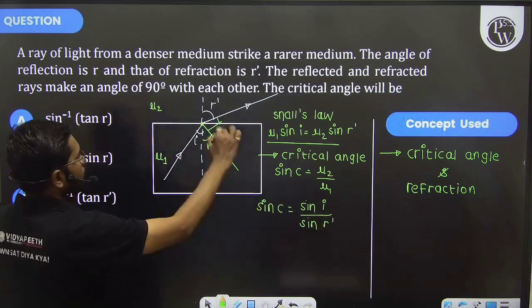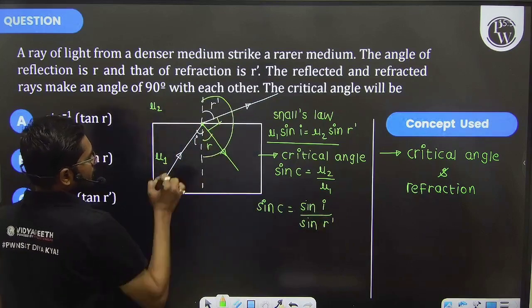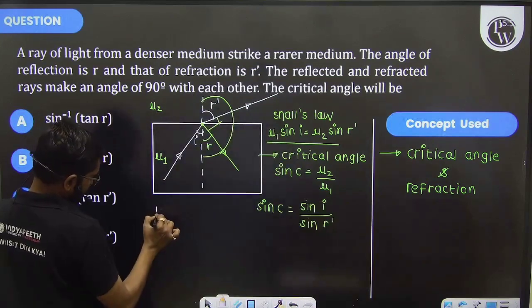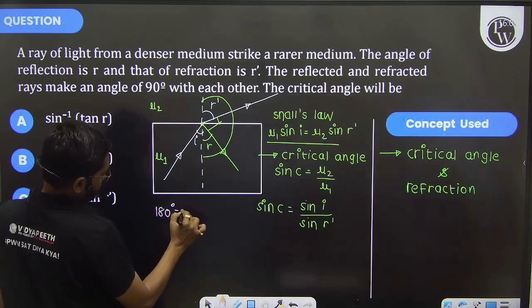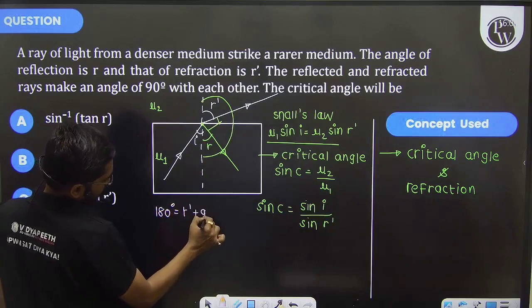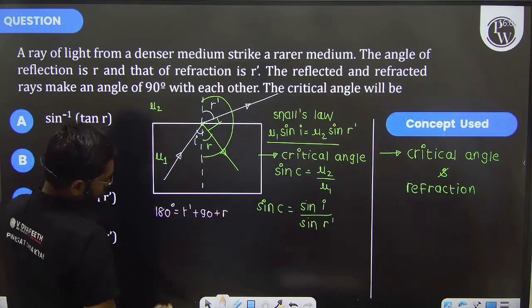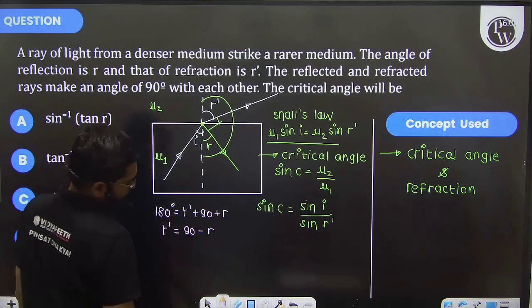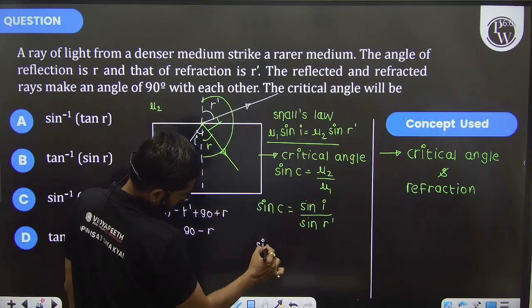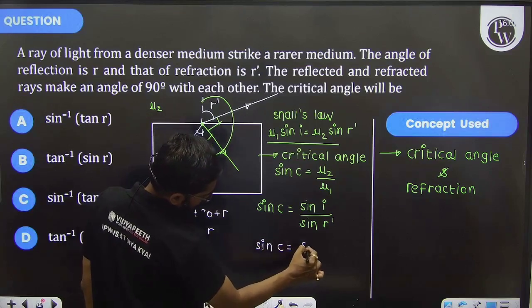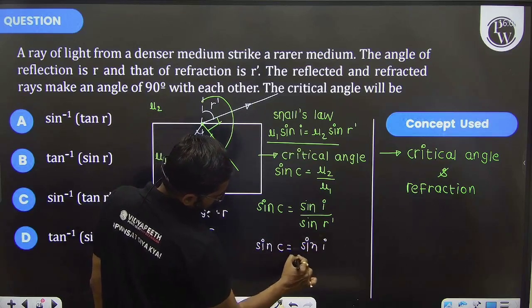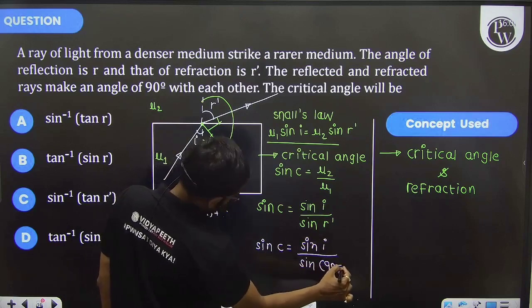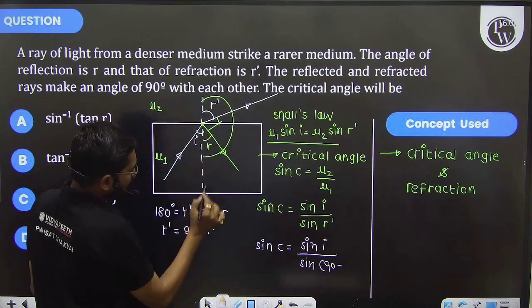Now if we use a little bit of geometry, this is a semicircular type of angle which is 180 degrees, equal to r' plus 90 plus r. So r' equals 90 minus r.